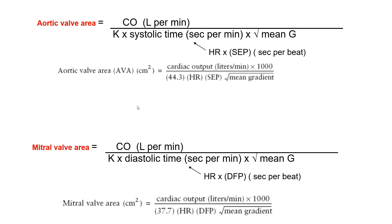Therefore the Gorlin equation for the aortic valve becomes cardiac output divided by systolic time — 5 liters per minute divided by 25 seconds per minute — times the square root of the mean gradient. You then further dissect the systolic time.